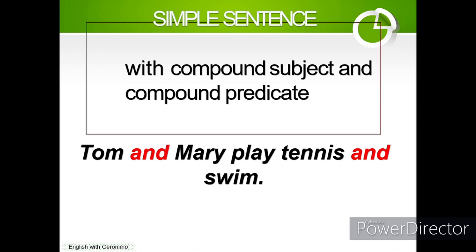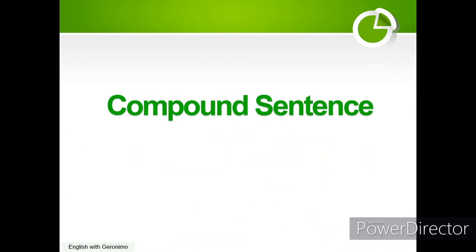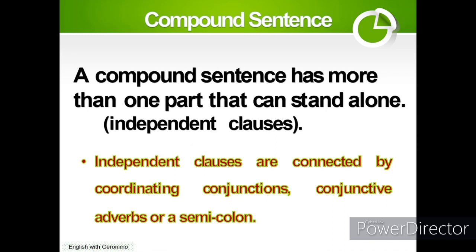As you've noticed, we use 'and' as our conjunction. Now let's proceed to the compound sentence. A compound sentence has more than one part that can stand alone, also called an independent clause. Independent clauses are connected by coordinating conjunctions, conjunctive adverbs, or a semicolon.